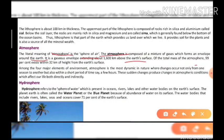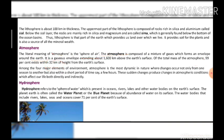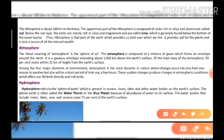99% of the total mass of the atmosphere exists within 32 km height from the earth's surface. As we go higher up, the air becomes thinner. Among the four major elements of the environment, the atmosphere is the most dynamic in nature — it changes not only from one season to another, but also within a short period of time, even within a few minutes.